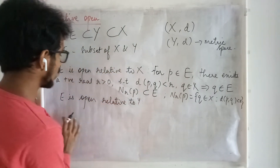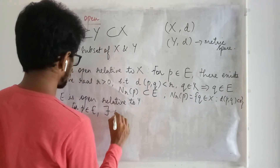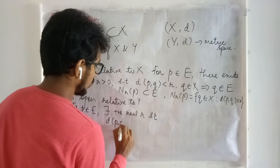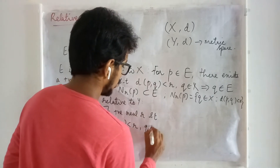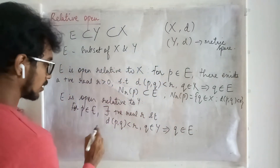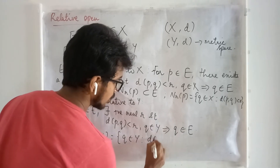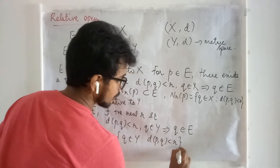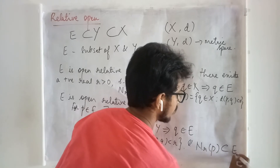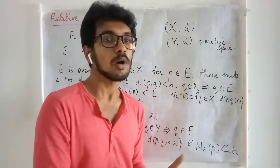Now similarly, if I have to say E is open relative to Y, then for every P in E, there exists a positive real R such that D(P, Q) is less than R and Q is in Y — meaning Q is a member of E. Here N_R(P) is the collection of points in Y such that D(P, Q) is less than R, and this N_R(P) is contained in E.